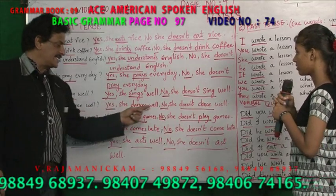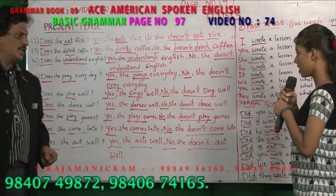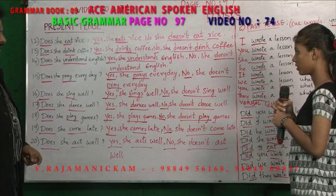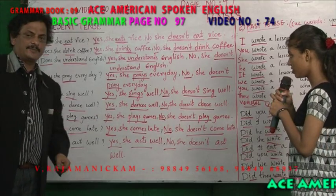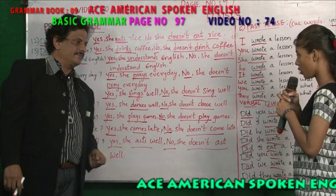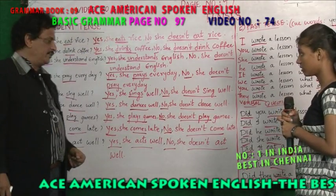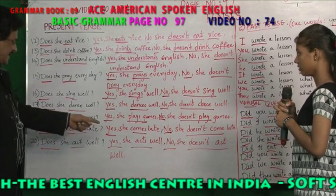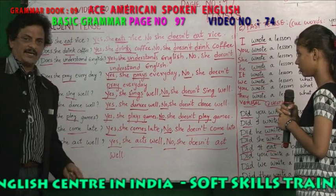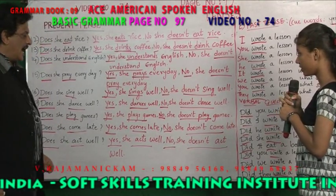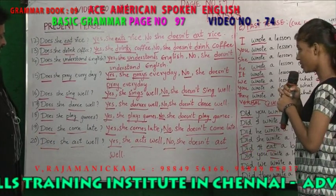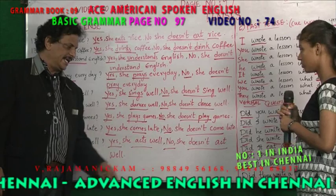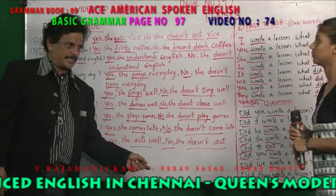Does she sing well? Does she dance well? Yes, she dances well. No, she doesn't dance well. Does she play games? Yes, she plays games. No, she doesn't play games. Does she come late? Yes, she comes late. No, she doesn't come late. Does she act well? Yes, she acts well. No, she doesn't act well.